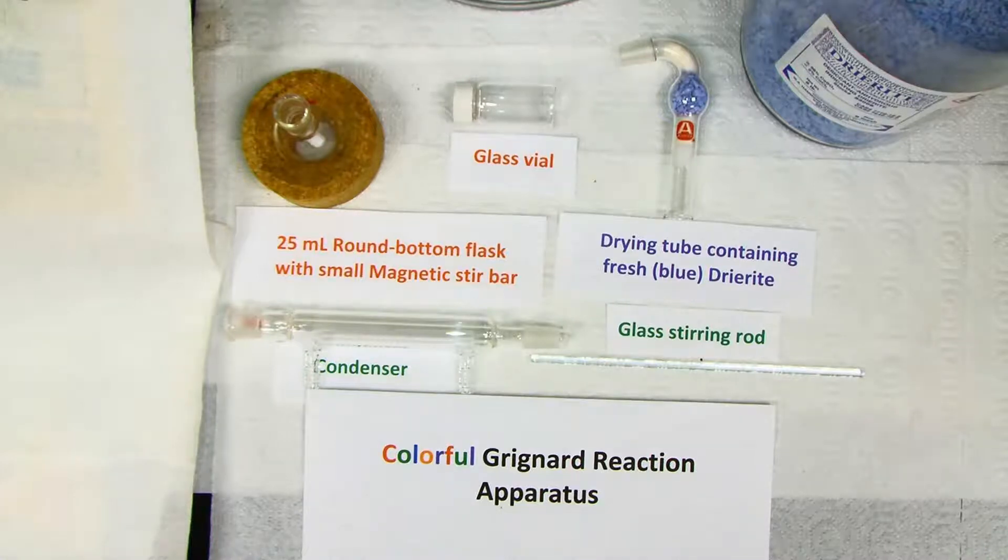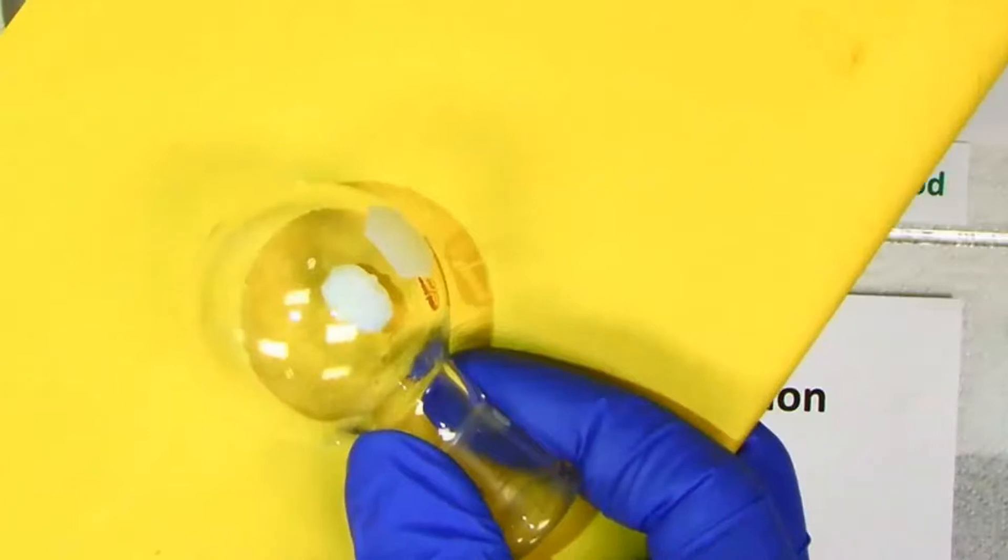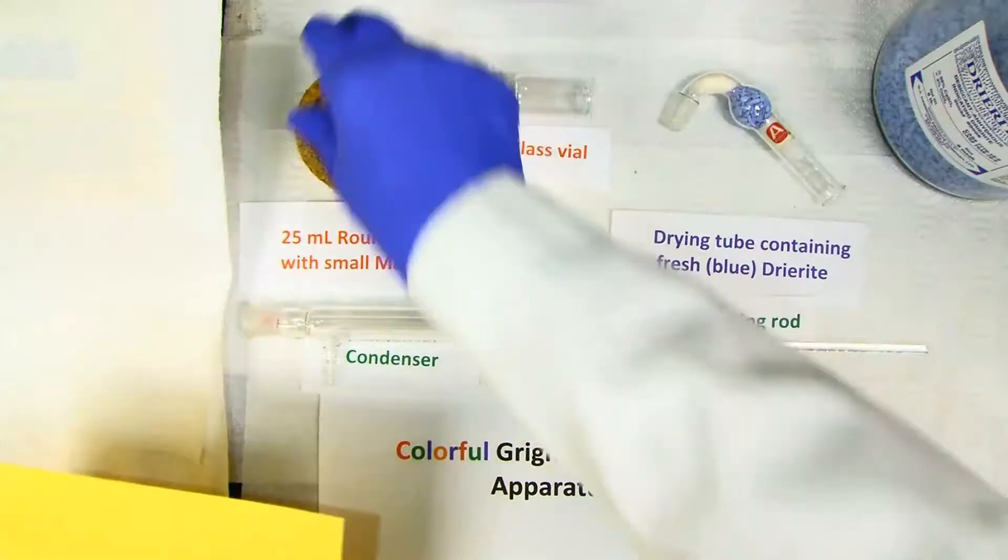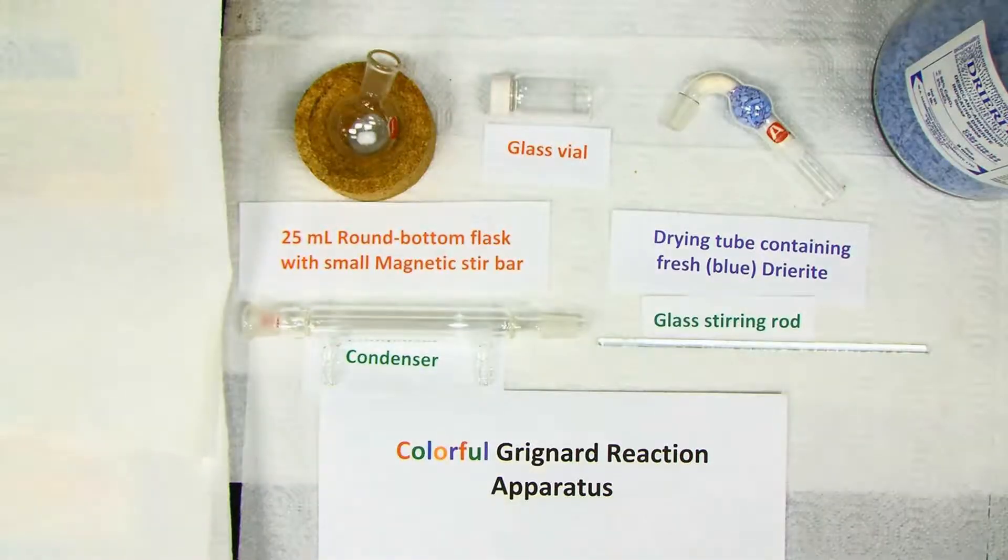The glassware we will use for this reaction is a 25 mL round bottom flask with small magnetic stir bar, the usual condenser, the glass stirring rod, glass vial, and an item you may not have used before: a drying tube containing fresh blue Drierite.